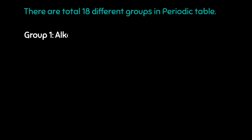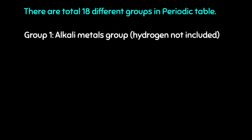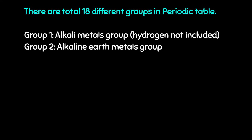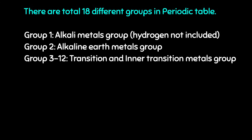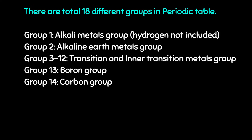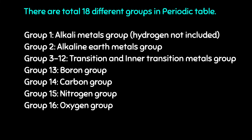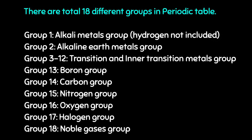In summary, there are a total of 18 different groups in the periodic table: Group 1 alkali metals group (hydrogen not included), Group 2 alkaline earth metals group, Groups 3 to 12 transition and inner transition metals group, Group 13 boron group, Group 14 carbon group, Group 15 nitrogen group, Group 16 oxygen group, Group 17 halogen group, Group 18 noble gases group. Thank you everyone, see you in the next one.